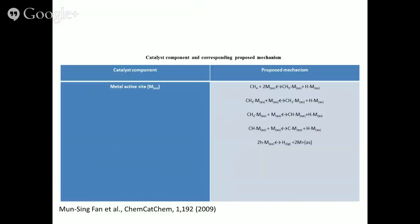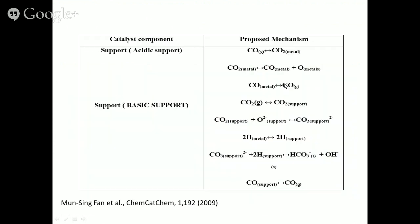On the catalyst surface, what reactions are taking place is the question. The catalyst is normally a supported metal catalyst, promoted with something. We have to identify what species can be formed on the active sites. Assuming the metal site is the active site, on the metal site, methane is activated to give rise to methyl radical, methylene radical, CH species, and carbon, and finally 2H giving rise to hydrogen. These are the proposed reactions possible on the active metal sites.